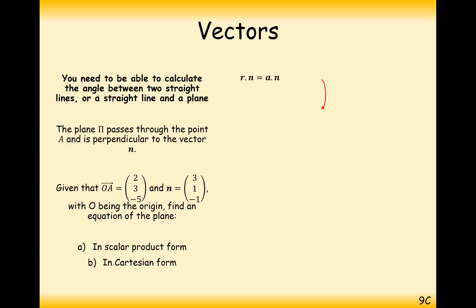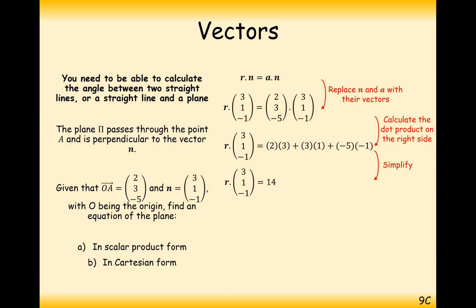So the scalar product form looks like this, r.n equals a.n. And sub in the values we know. We know n, we know a, so just substitute those in. Work out what a.n is, if possible, and it is in this case. And we get this. This is the equation of our plane. It looks quite weird, and it does take some getting used to. But that is an equation of a plane.